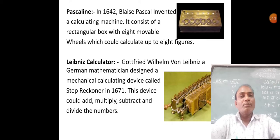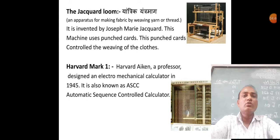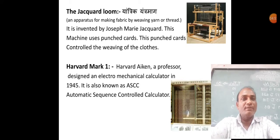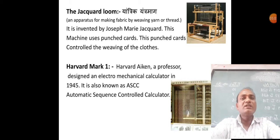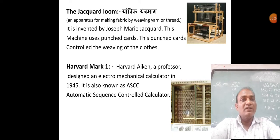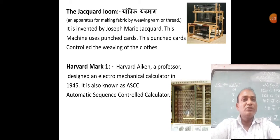The next computing device is the Jacquard Loom. It is also a calculating device used for making fabric by weaving yarn or thread. It was invented by Joseph Marie Jacquard. This machine uses punch cards — similar to an ATM card — to operate the machine. These punch cards control the weaving of the cloth.